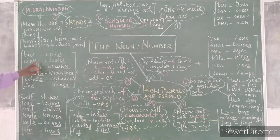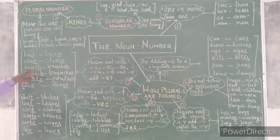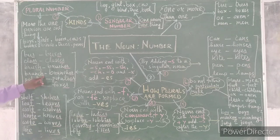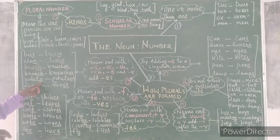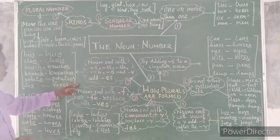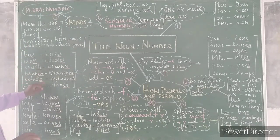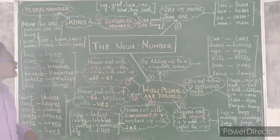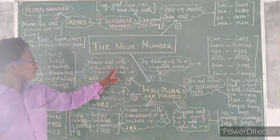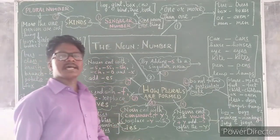Fox — foxes, ending with X. So for nouns ending with S, SS, SH, CH, O, and X, we add ES to form the plural noun. This is the second way of forming a plural number.